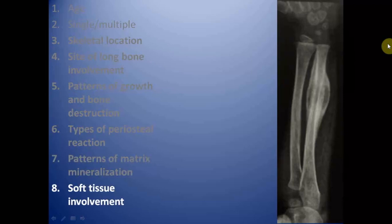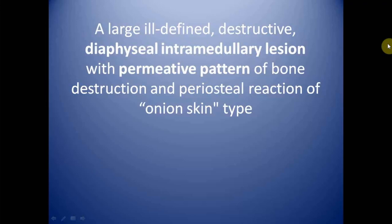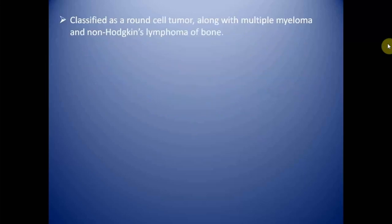This is the case of a large ill-defined destructive diaphyseal intramedullary lesion with permeative pattern of bone destruction and onion skin type periosteal reaction. This is the case of Ewing sarcoma. Ewing sarcomas are classified as a round cell tumor, along with multiple myeloma and non-Hodgkin's lymphoma of bone.